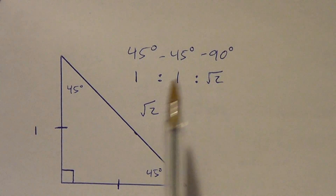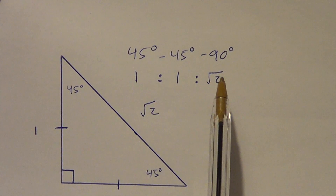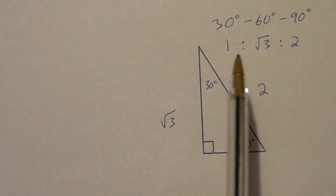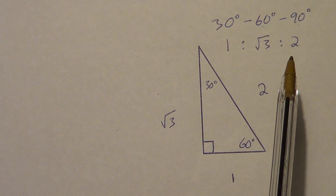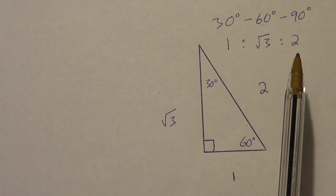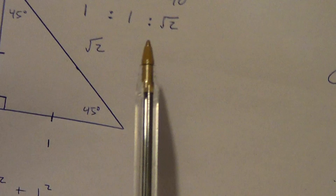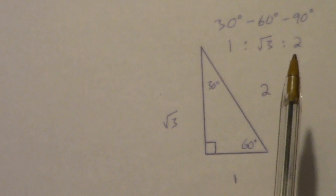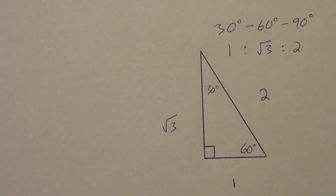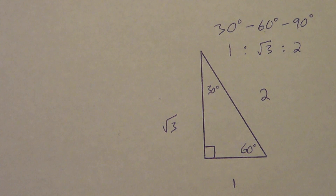One last time: 45-45-90 has sides one, one, root two — memorize it. 30-60-90 has sides one, root three, two — no root on that two. Those are the only two things you must memorize in Lesson 7.4. We're going to use those proportions as we move into the second video.